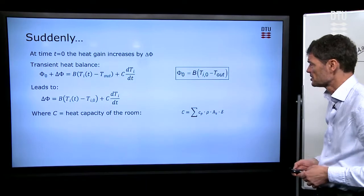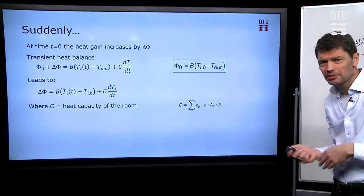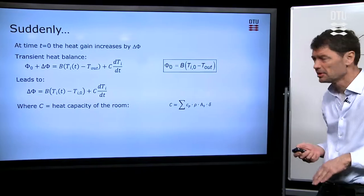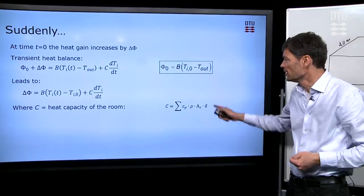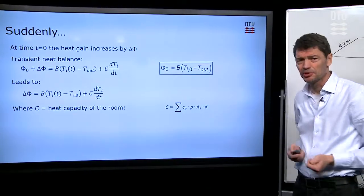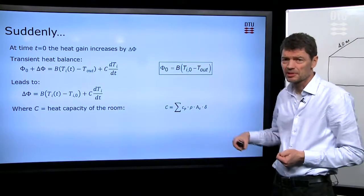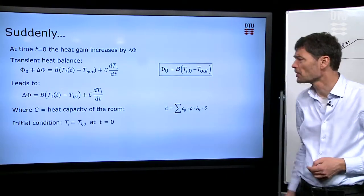The heat capacity of the room, we have to take for all those layers that surround the room, possibly materials within the room, furniture, what you have. So sum up all the contributions to the heat capacity from all such components in the room.